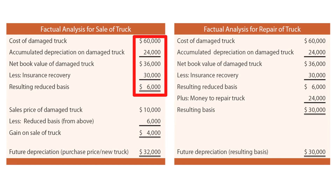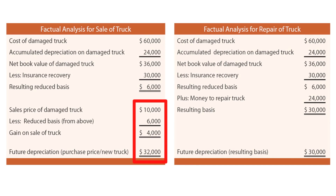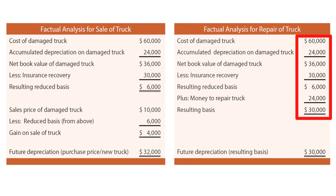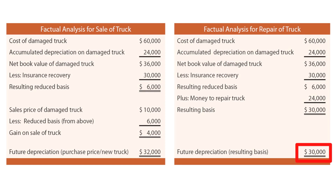To think through this thoroughly: on the sale of the truck, it's a $60,000 cost with $24,000 of accumulated depreciation, giving a $36,000 net book value. We get $30,000 back from insurance, leaving a remaining basis of $6,000. Trading it in for $10,000 gives rise to a $4,000 accounting gain, and then we buy a new truck for $32,000, which triggers future depreciation of $32,000. Alternatively, for the repair, we have a $6,000 reduced basis, add $24,000 for repair, arriving at a $30,000 basis and $30,000 of future depreciation.